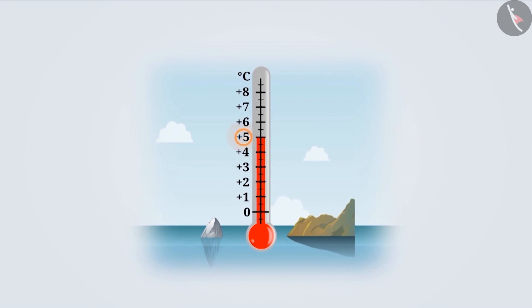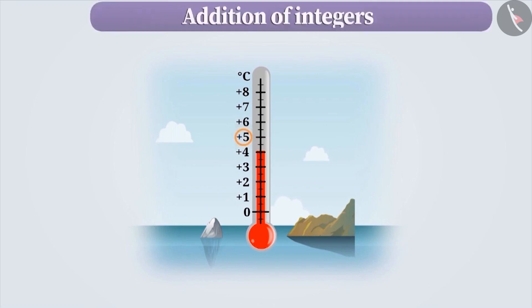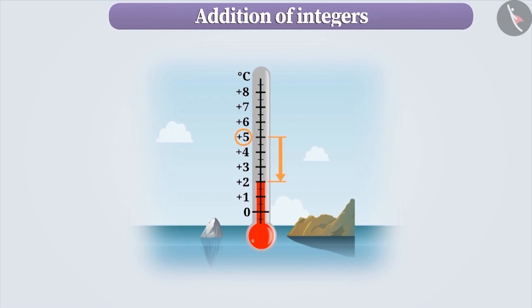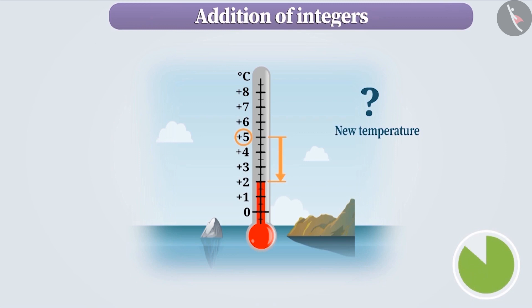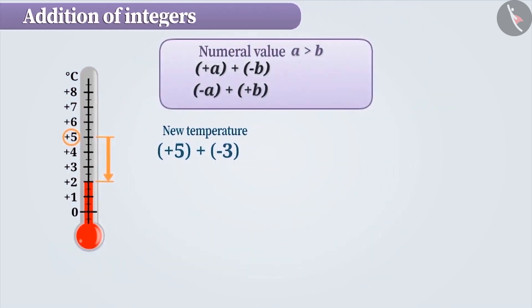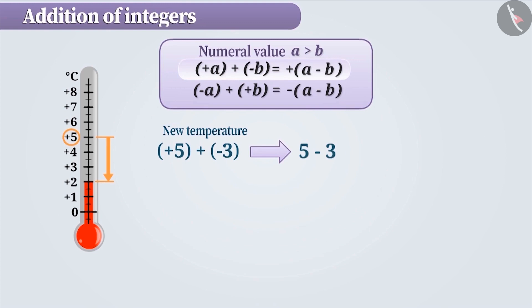Now, let us suppose the temperature is plus 5 degrees centigrade and there is a change of minus 3 degrees centigrade in the temperature. So, how will you find the new temperature? It can be found by finding the value of plus 5 plus minus 3. If numbers to be added have different signs, then we ignore the signs and subtract the smaller number from the larger number. Later, the sign of the larger number is included in the result. Here, we subtract 3 from 5 and the sign of the larger number, which is plus, is included in the result, giving us plus 2.